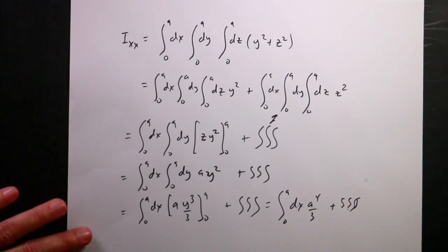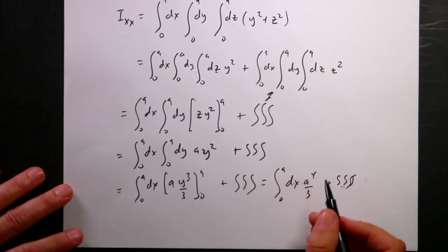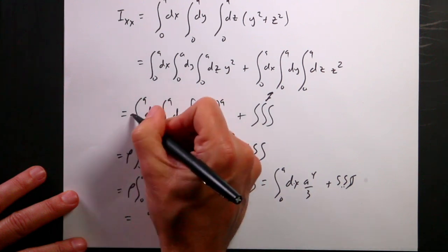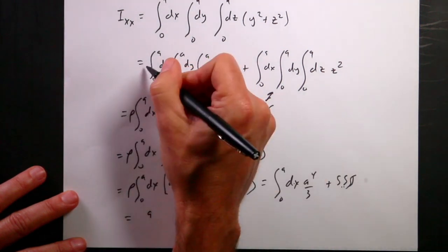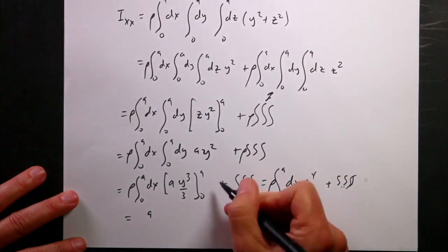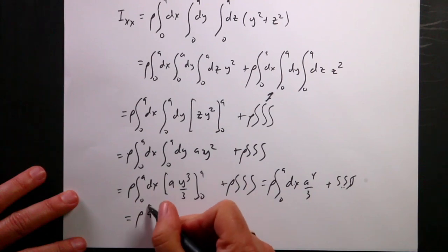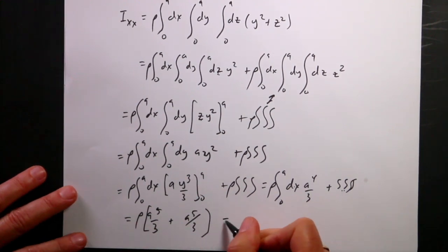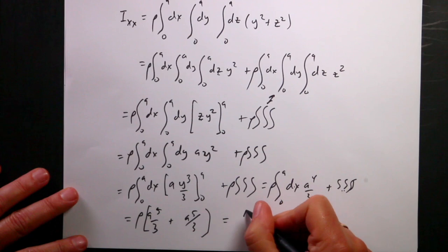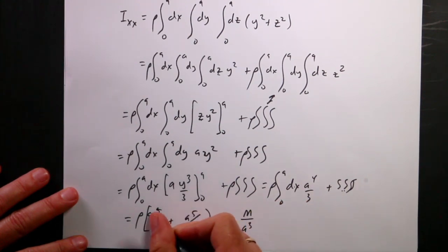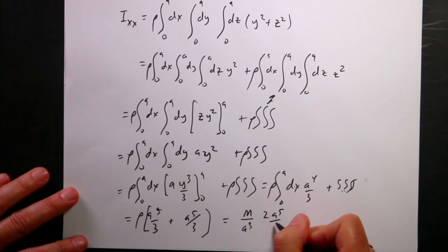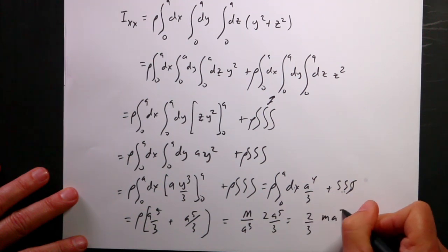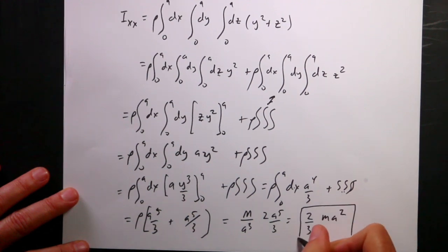Doing the same process for the z² term gives another a⁵/3, so together I have ρ times 2a⁵/3. Substituting ρ = m/a³ and simplifying, the a's cancel and I get Ixx = (2/3)ma².